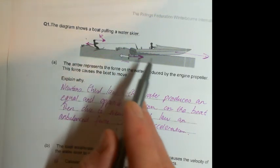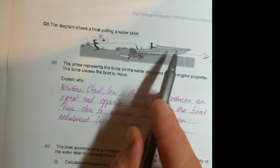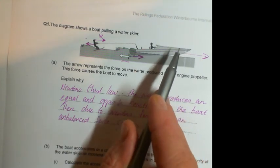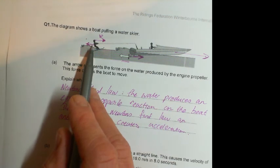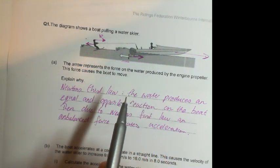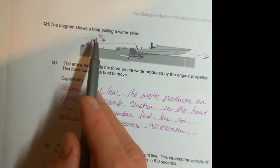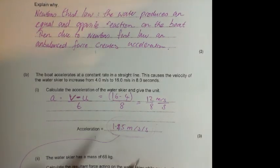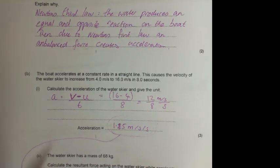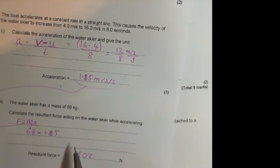Okay, if it was going at exactly this resultant force, well then they'd never get that acceleration of 1.5 because the resistance would mean that the actual force on the skier would be less than this 102 due to the water resistance. Okay, so what we say is that the boat has to pull a greater force to overcome water resistance.